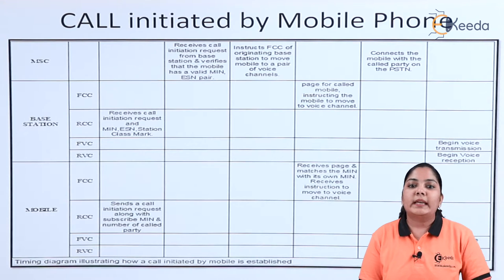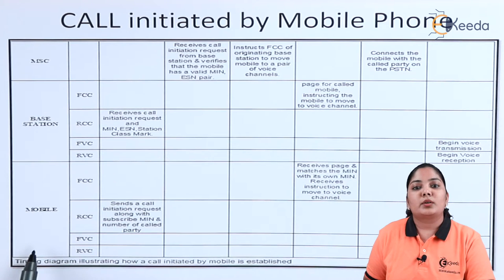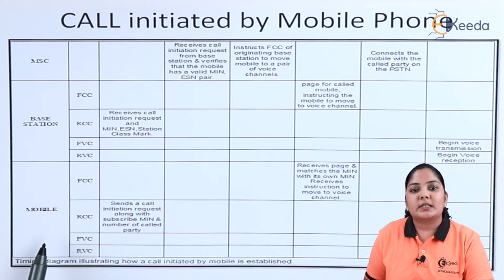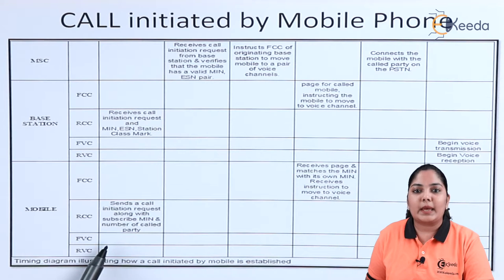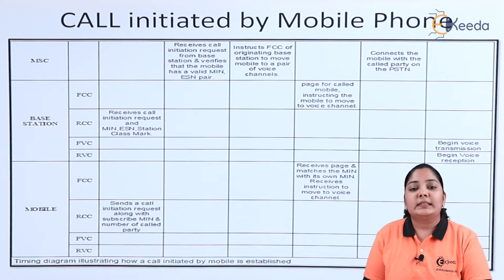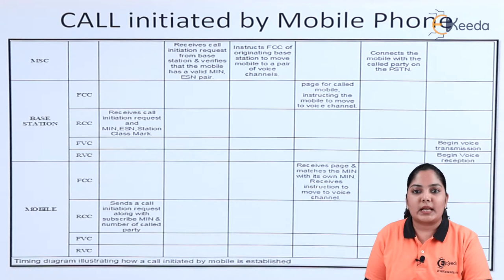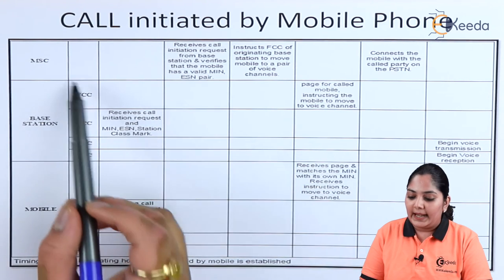Next we'll look at the call initiated by the mobile phone. Here again I have the timing diagram showing various channels and the MSC. Since the call is initiated by the mobile phone, the mobile station transmits a controlling message to the base station on the reverse control channel — sending a call initiation request along with the subscriber MIN number of the calling party. The base station receives on the reverse control channel the call initiation request, MIN, ESN (Electronic Serial Number), and station class mark (power level), then transfers the request to the MSC.